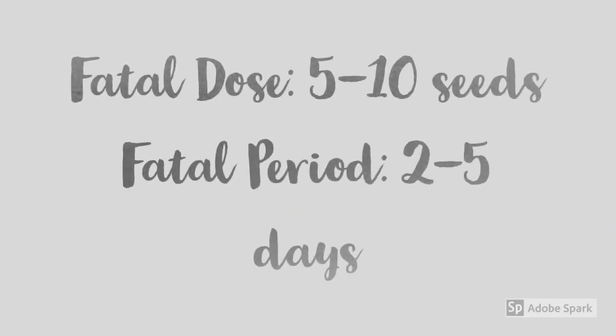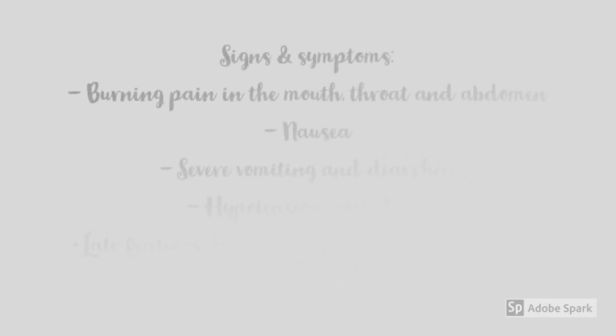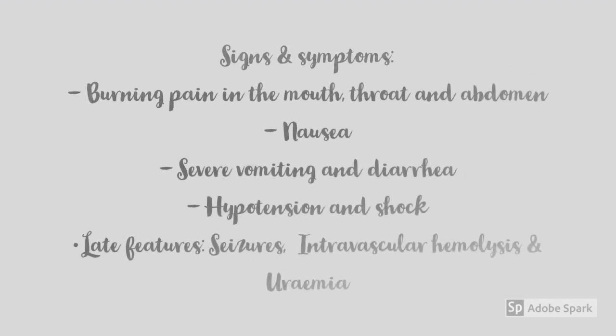Talking about fatal dose and fatal period: the fatal dose is the dose which can injure or cause harm to a person, and it is 5 to 10 seeds for Ricinus communis. The fatal period is the duration in which an average healthy individual can be killed by an average fatal dose of the poison, provided there is no availability of medical aid — and it is about 2 to 5 days for Ricinus communis.